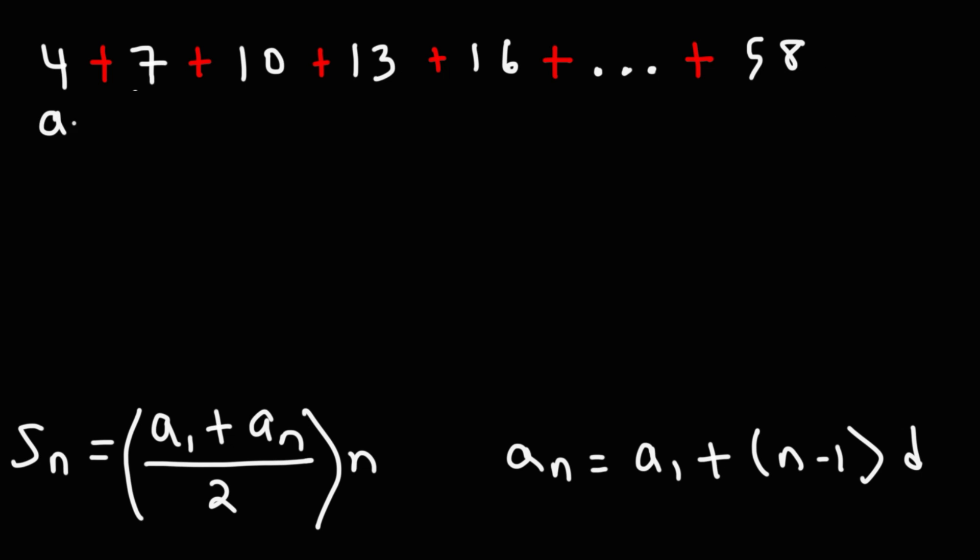So this is the first term. The last term is the 19th term. So we're looking for the sum of the first 19 numbers in this series. a sub 1, the first term, is 4. a 19, the last term, is 58 divided by 2 times 19 terms.